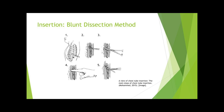The standard method for inserting a chest tube is called the blunt dissection method. First, the patient should be positioned appropriately, followed by skin preparation with antiseptic and then draping. Next, local anesthetic should be infiltrated into the skin and subcutaneous tissue at the insertion site. If possible, an intercostal block should be performed, encompassing three levels — the site of incision and one intercostal space below and above where the tube will be placed.